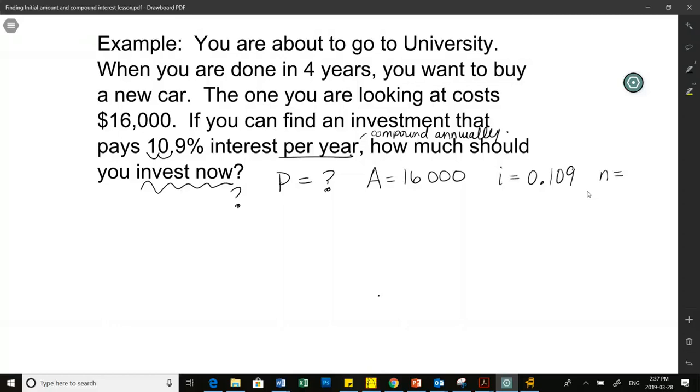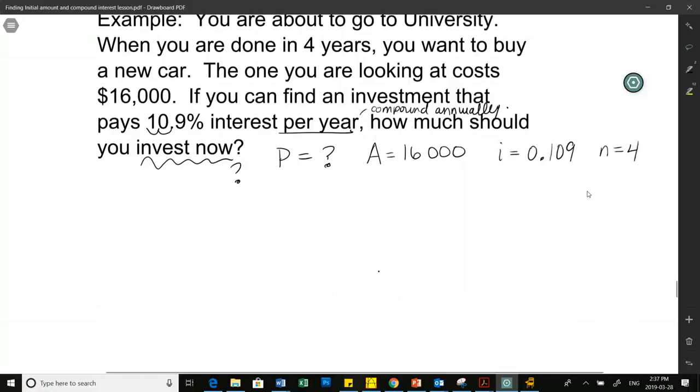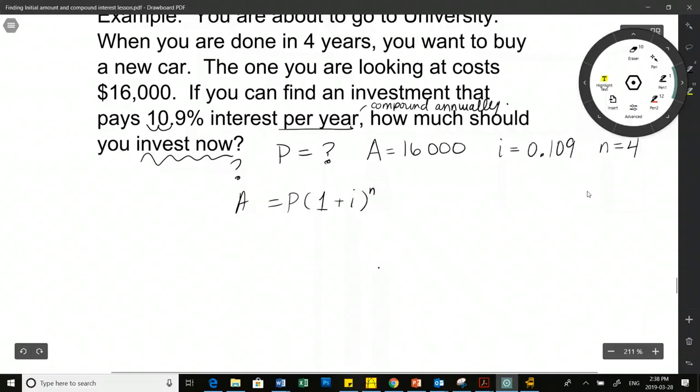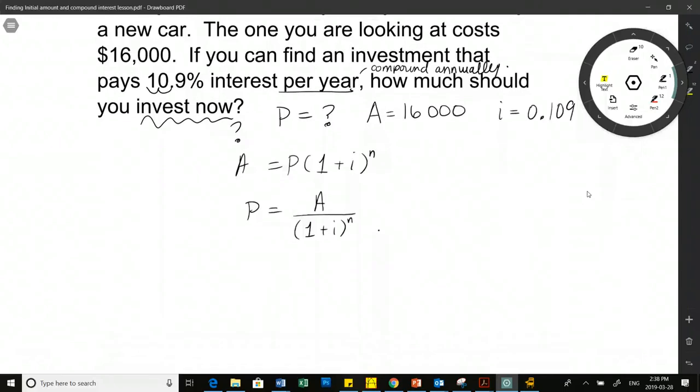Four years, compounded once every year. How many times has my interest been compounded in the four-year period? Four times. That's n. What I could do to save myself a tiny bit of time here is just prearrange this formula so that P is isolated. So what I would want to do is just divide that whole thing out. And if I'm looking for the P value, I would be doing A divided by 1 plus i to the n. So that's kind of like our prearranged formula that we talked about at the beginning of this lesson, just in terms of compound interest.